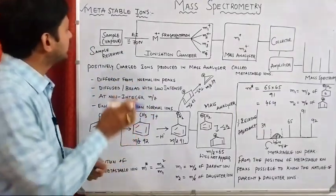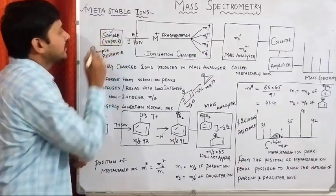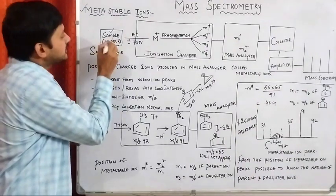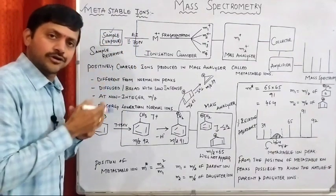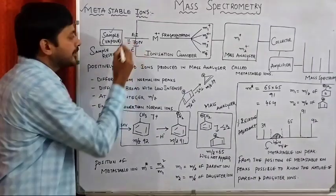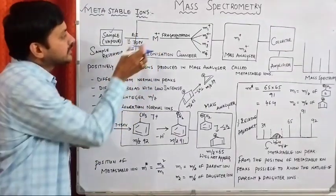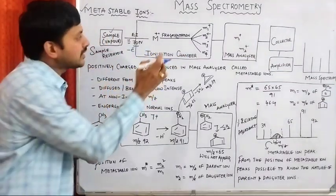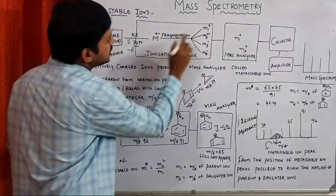In mass spectrometry, we have a sample reservoir containing our unknown sample, which must be in the gaseous state. This is subjected to electron bombardment, also called electron impact. The removal of a single electron takes place from your molecule, thereby generating the molecular ion. The molecular ion is further subjected to different kinds of cleavages, commonly called the fragmentation procedure.